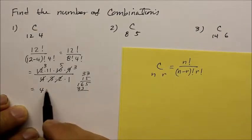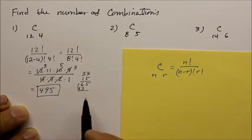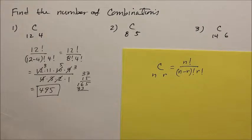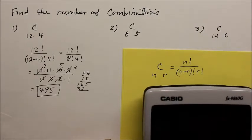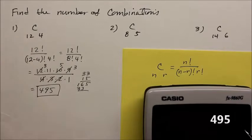So do the arithmetic. We get 495. Ta-da! Or you could use the calculator to check. So we could say 12 combination choose 4. There it is, 495.